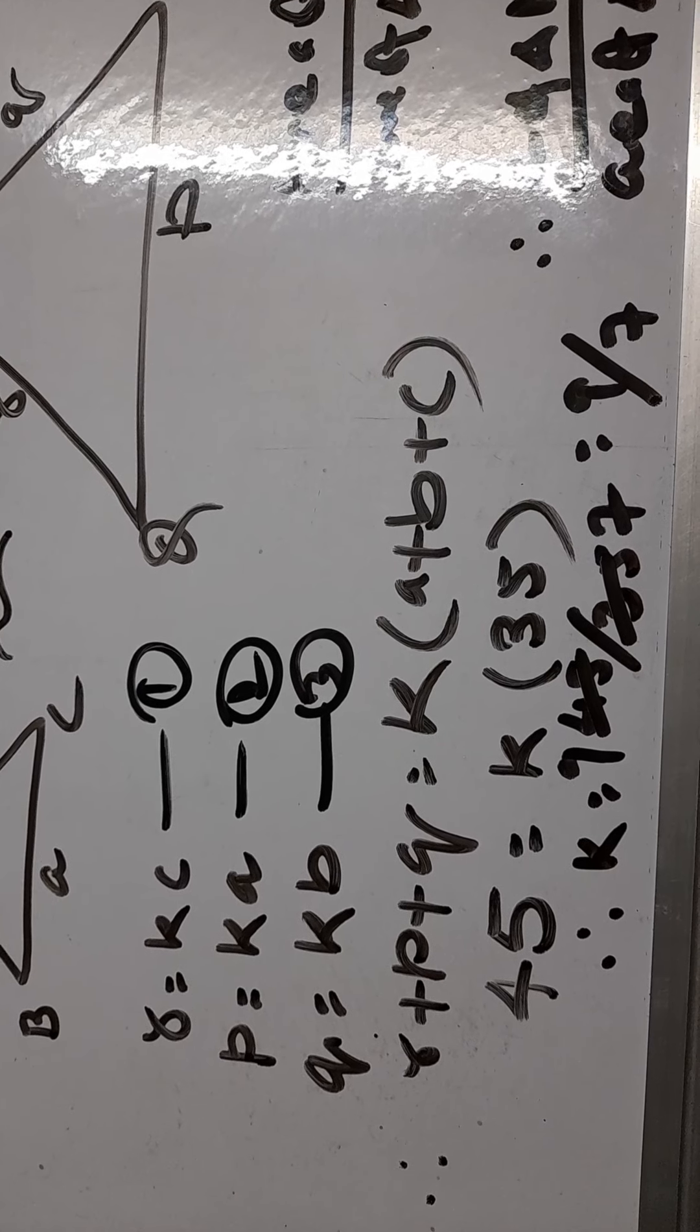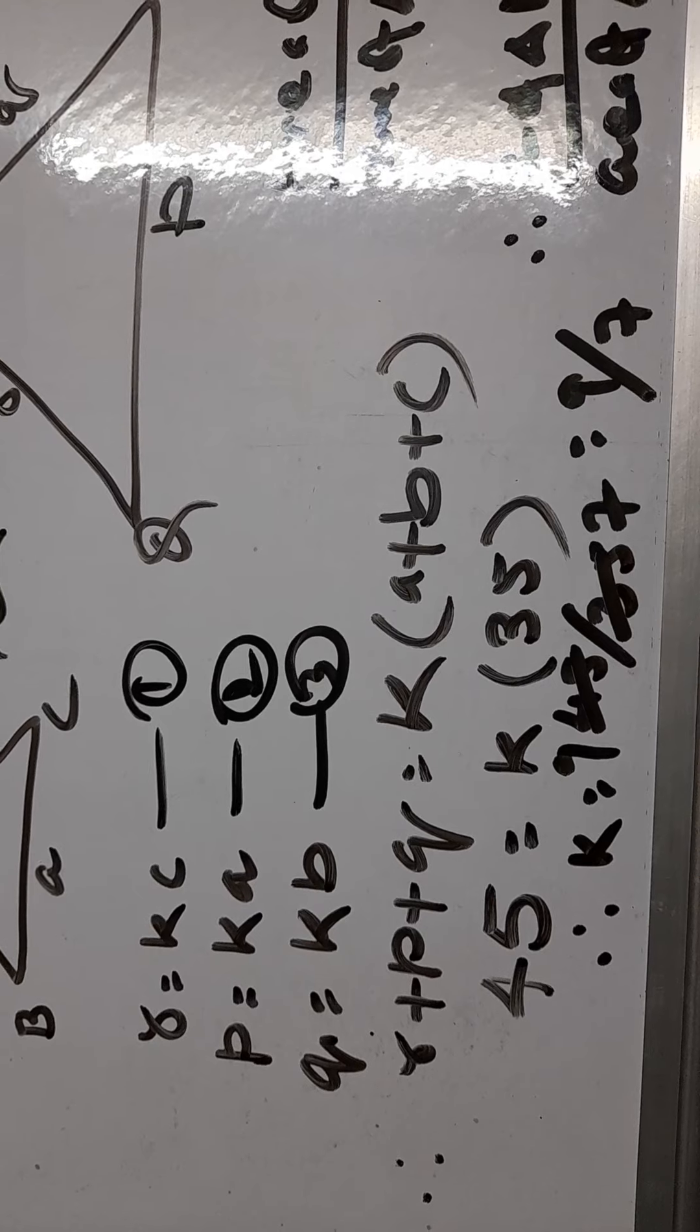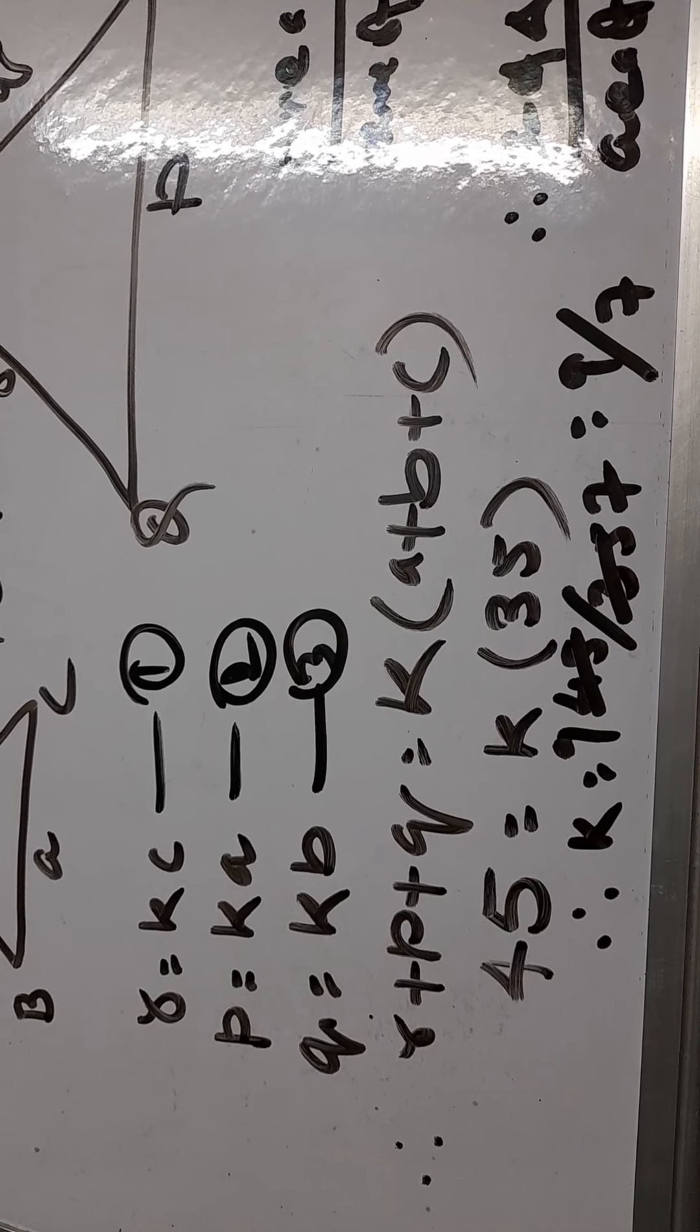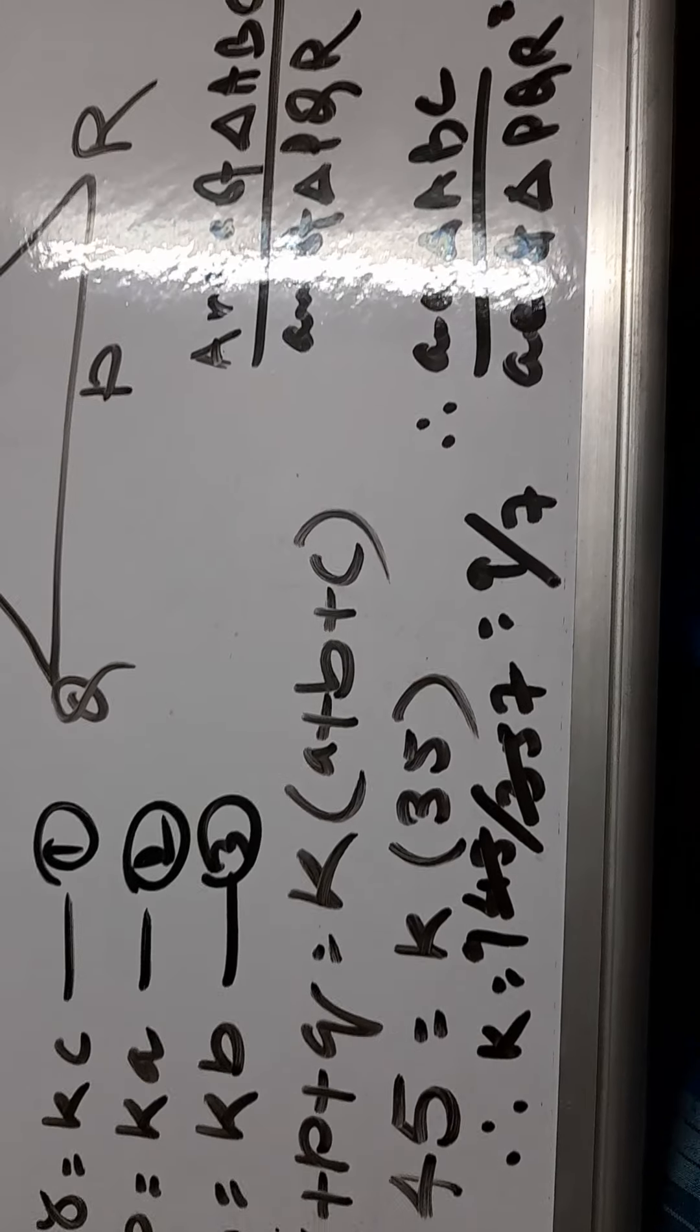So 45 equals K times perimeter of triangle ABC that is 35. So K equals 45 divided by 35, which is 9 by 7.